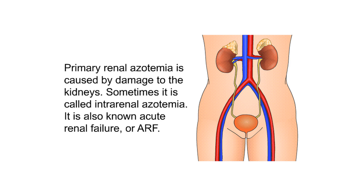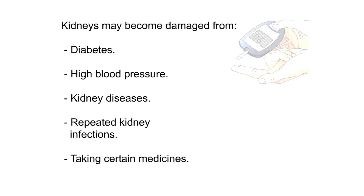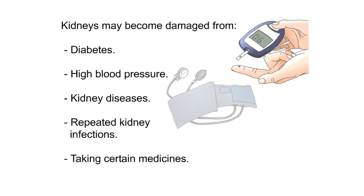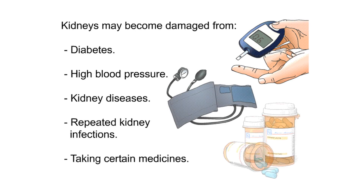Pre-renal azotemia may also result from certain types of surgery or injury to the kidney. Primary renal azotemia is caused by direct damage to the kidneys. Sometimes it is called intra-renal azotemia. It is also known as acute renal failure, or ARF. Kidneys may become damaged from diabetes, high blood pressure, kidney diseases, or repeated kidney infections.